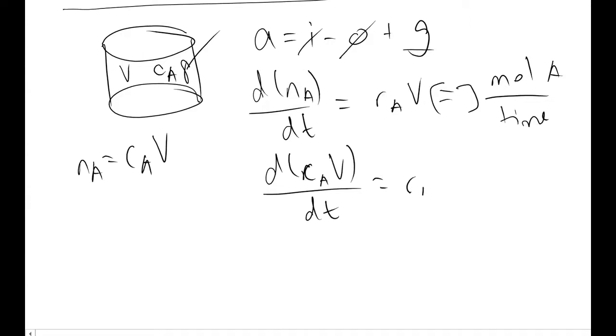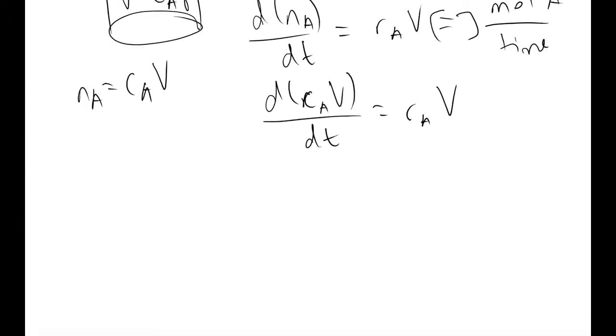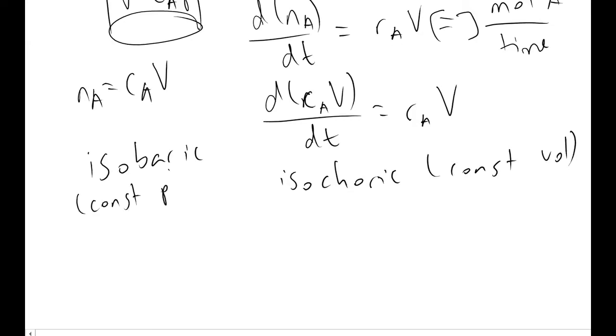There are two cases, or two types of BSTRs we can have. We can have isobaric BSTRs or isochoric BSTRs. So constant volume for the isochoric and constant pressure for the isobaric. So this is a key equation to remember. If we have a constant volume, we'll start off with isochoric because it's simpler.